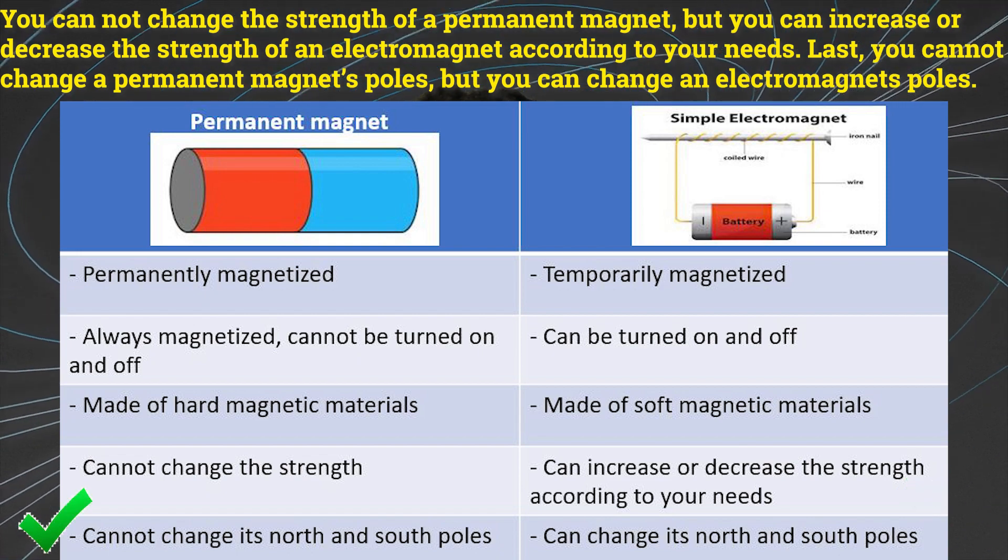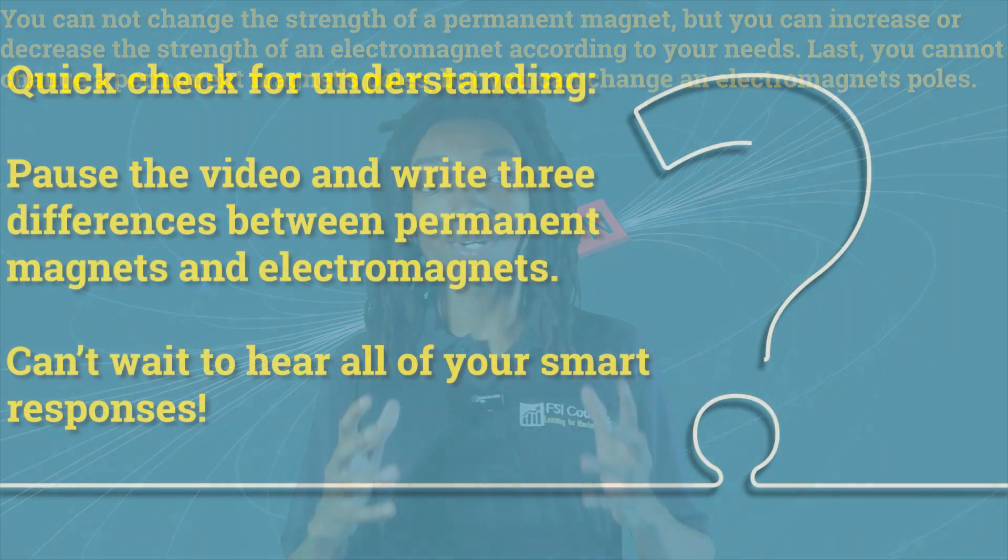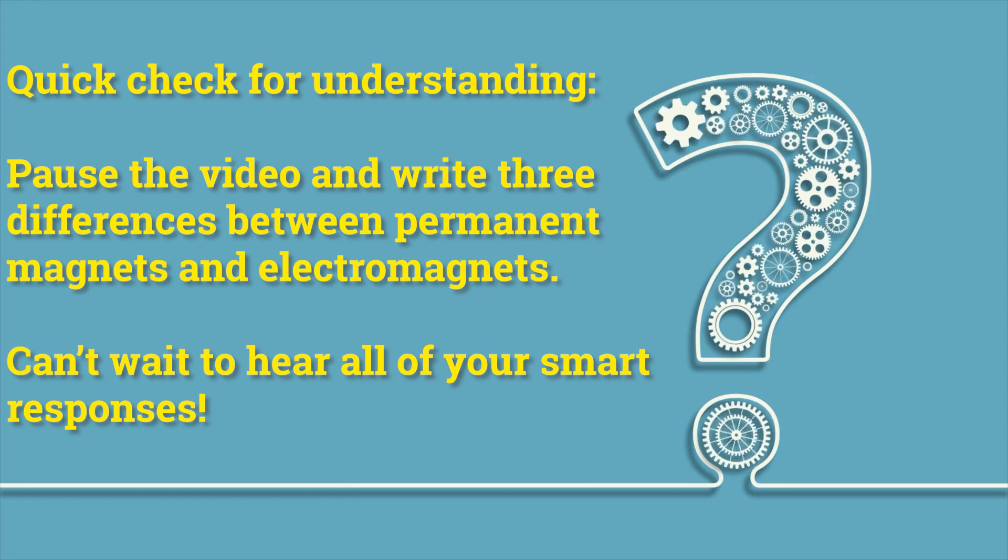Last, you cannot change a permanent magnet's pole, but you can change an electromagnet's pole. Quick check for understanding. Pause the video and write three differences between permanent magnets and electromagnets. Can't wait to hear all of your smart responses.